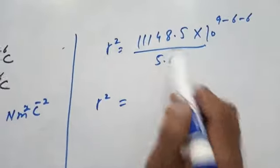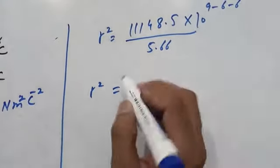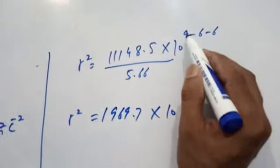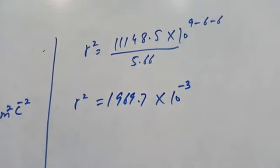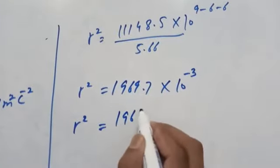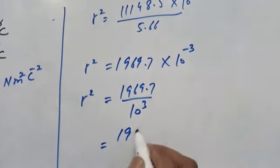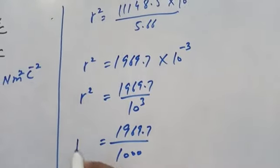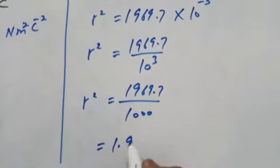Dividing this number by 5.66, we get 1969.7 × 10⁻³, which can be written as 1969.7/10³ or 1969.7/1000, which equals 1.969.